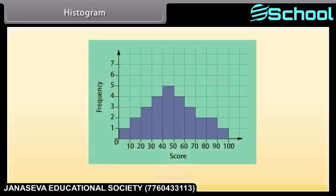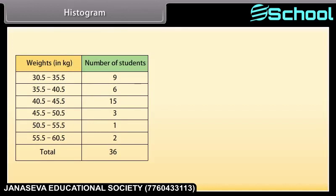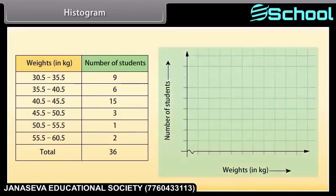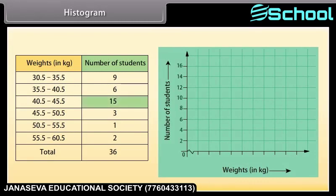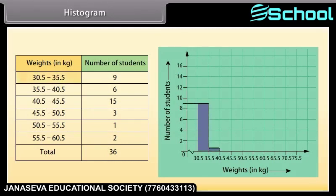Like a bar chart, a histogram is made up of columns plotted on a graph. Usually there is no space between adjacent columns and it is used for continuous intervals. This frequency table represents the weight of 36 students with continuous class intervals. To plot the histogram, we represent the weights on the horizontal axis and the number of students on the vertical axis. Since the maximum frequency is 15, we choose a scale to accommodate it. Since the first class interval starts from 30.5 and not zero, we mark a break on the axis. We then draw the rectangle for the class interval 30.5 to 35.5, and similarly draw the other rectangles — this is called a histogram.